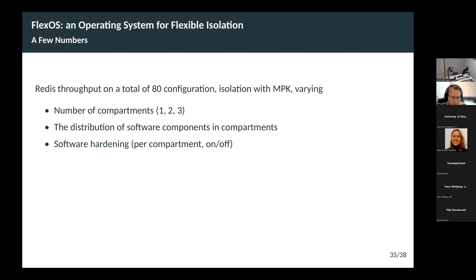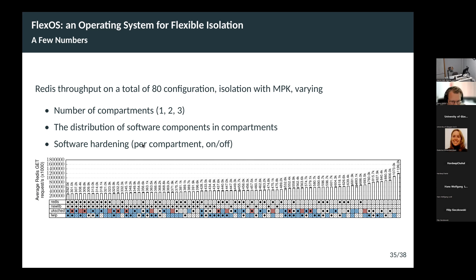Let me show an example: the throughput of Redis, a key-value store database, with 80 configurations of FlexOS in which we isolate compartments with MPK. We vary the number of compartments, the distribution of software components — TCP/IP stack, user code, and so on — into the compartments, and apply some software hardening like address sanitizer on a per-compartment basis. It's a library operating system similar to a unikernel, so you have things like the scheduler and TCP/IP stack combined with the application: Redis code, the standard C library, Newlib, the scheduler, and the TCP/IP stack.